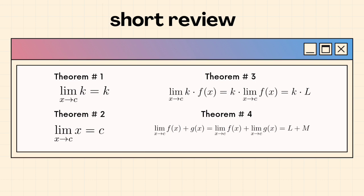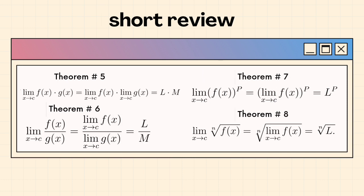Theorem number 4 says that the limit of f of x plus g of x as x approaches to c is equal to the limit of f of x as x approaches to c plus the limit of g of x as x approaches to c. Theorem number 5 is almost the same as theorem number 4 but the operation used is multiplication. The same situation exists for theorem number 6 but it is for division.